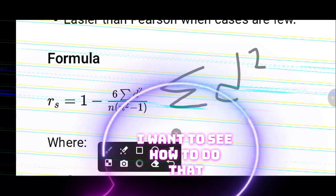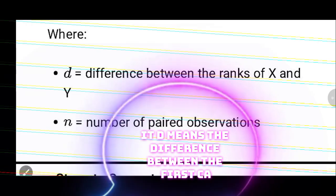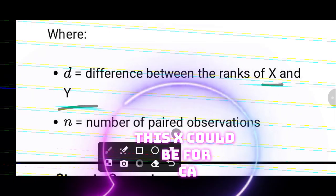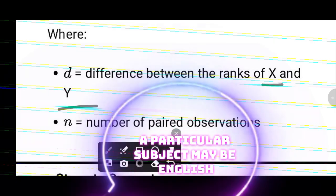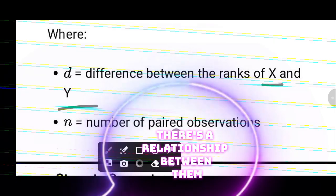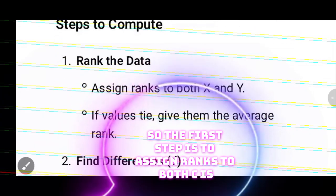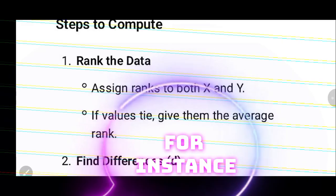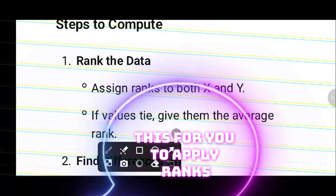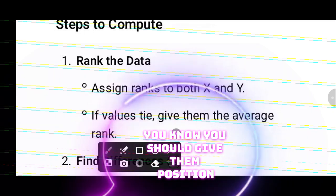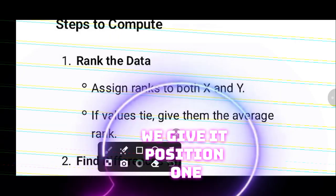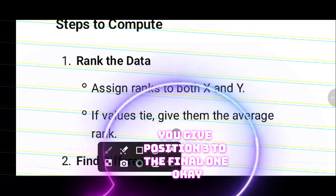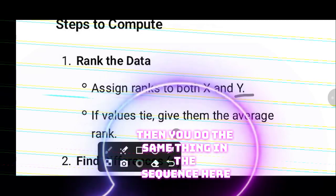D means the difference between the rank of x and the rank of y. X could be the first CA score and y the second CA. Sometimes the question may name x as English and y as Mathematics. The first step is to assign ranks to both sets of scores. The highest score gets position one, the second highest gets position two, and so on. You do the same for the second set of scores.